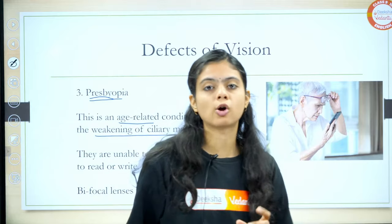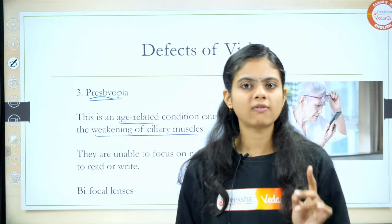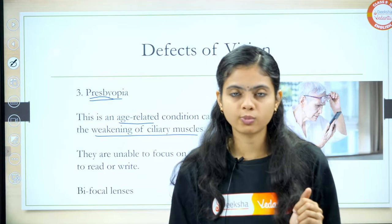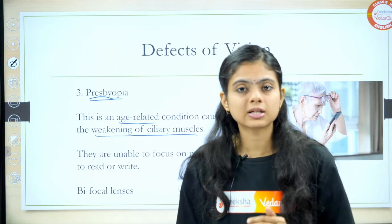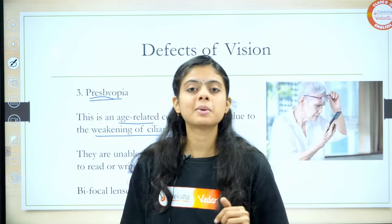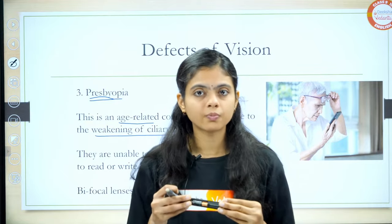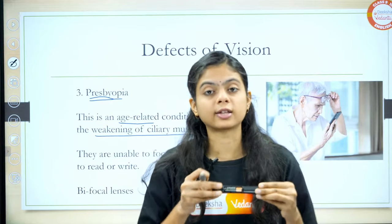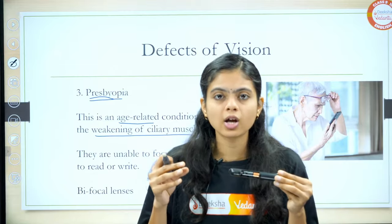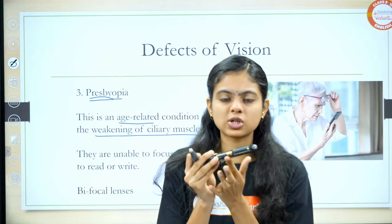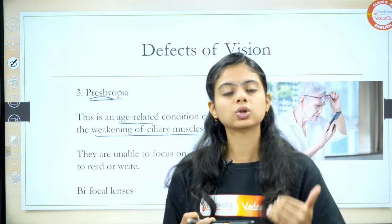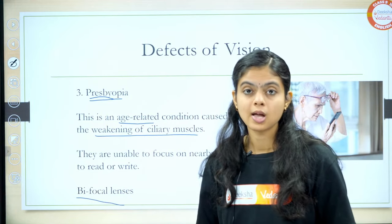What kind of problem do these people face? In presbyopia, people are sometimes unable to see far objects and sometimes unable to see near objects. When ciliary muscles are weak, they are unable to expand and unable to contract — the functioning of the muscle has stopped. When this functioning stops, the focal length cannot be changed. The lens will not become thick or thin, so focal length will not change, and when focal length does not change, you can't see things properly. To correct this, we use a bifocal lens.